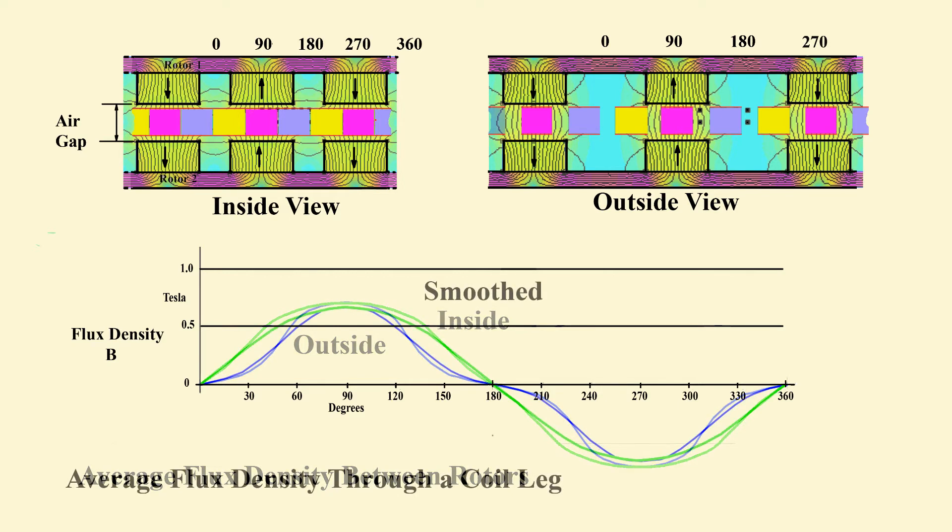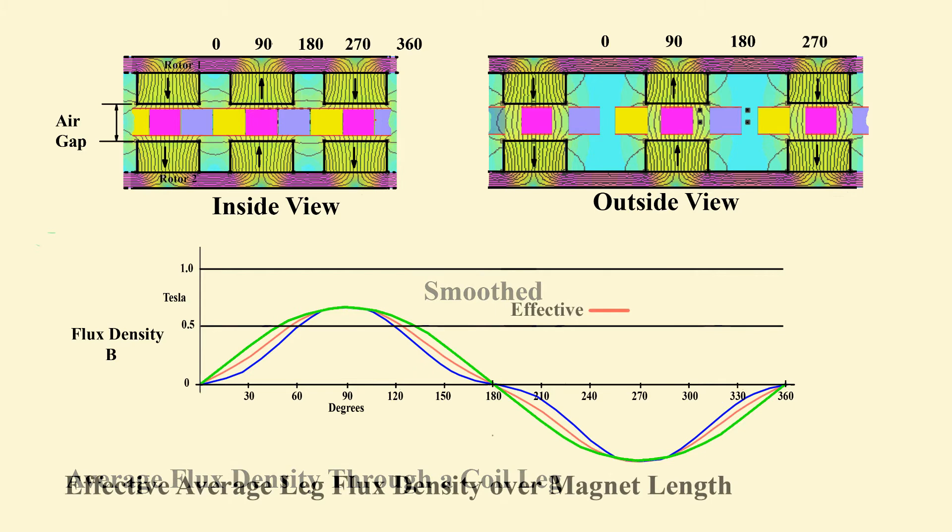The densities must also be averaged over the leg widths. This somewhat reduces the peaks and the distortion. The curves are then combined for an effective value along a magnet length, accounting for speed differences between inside and outside radii.